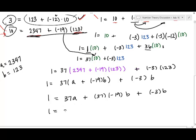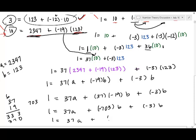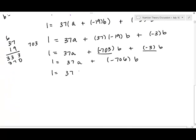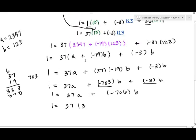I've got 37 times A. Now I've got 37 times negative 19. 37 times 19 is 703. So we get negative 703B plus negative 3B. And negative 703 plus negative 3 is negative 706. Remember, A and B aren't really A and B. They have specific values. I'm going to put them back in there. A was 2347 and B was 123.